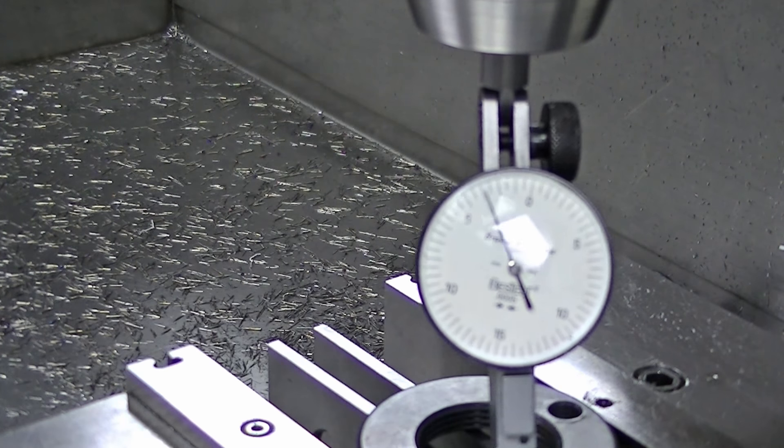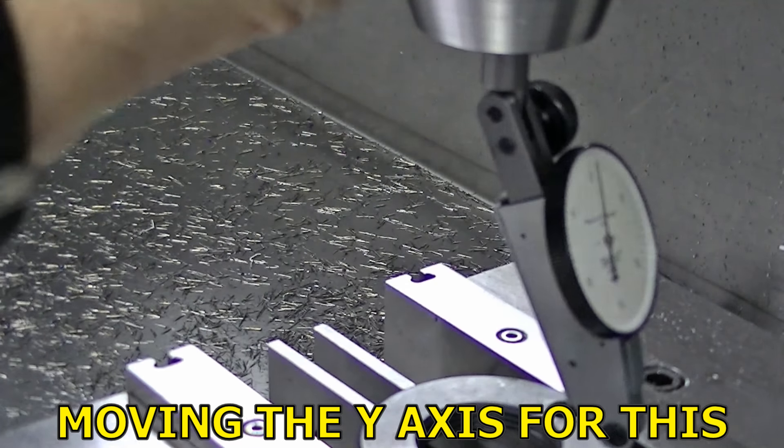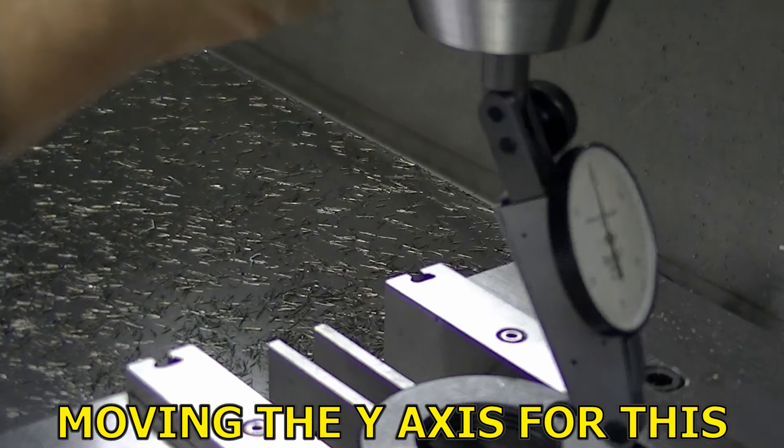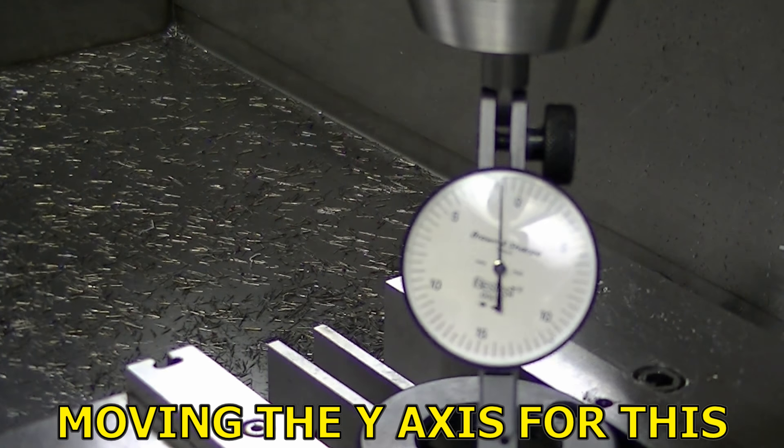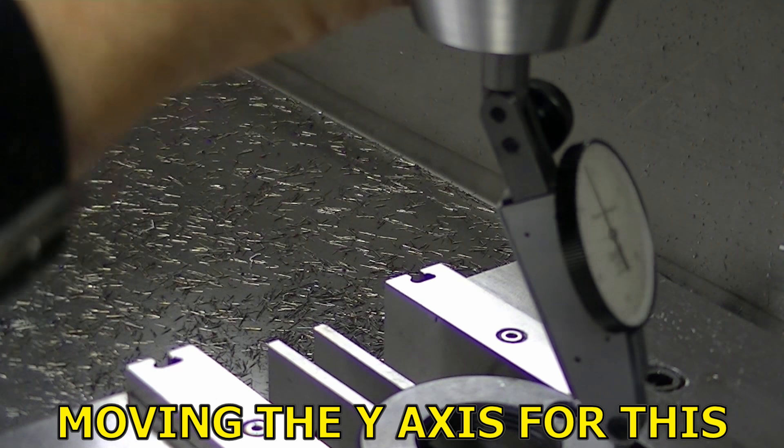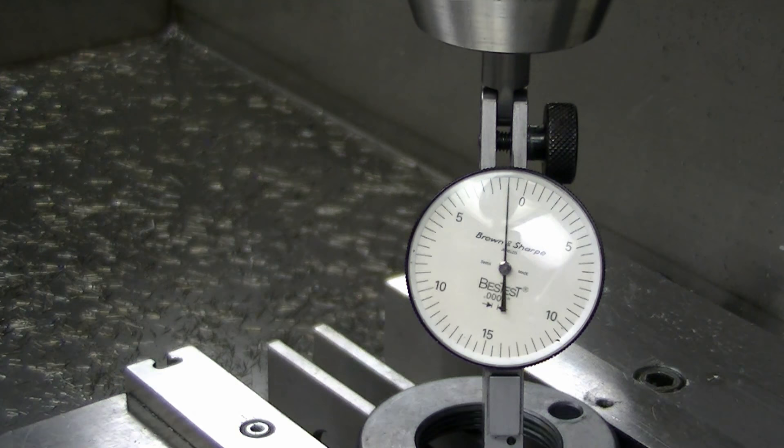And then for a part like this where it's not critical, you can just combine, compare these two sides as far as you can get with the indicator. And it's pretty close enough. So I'm just making these equal on both sides. Should be pretty close to zero. The part's being squashed out around a little bit. But for what we're doing here, that's plenty good enough.